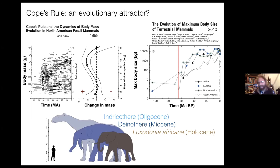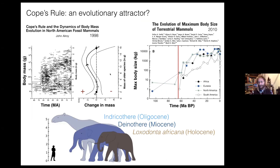One of my favorite science figures is from a paper by John Alroy in 1998 — Cope's Rule and the Dynamics of Body Mass Evolution in North American Fossil Animals — where Alroy compiled an enormous compendium of body sizes of different North American animals over the last 80 million years, as well as the dates of their occurrence. Each clade is represented by a line showing how long it was around.